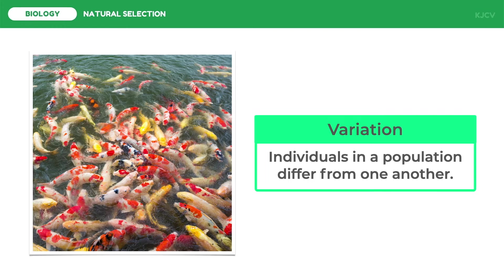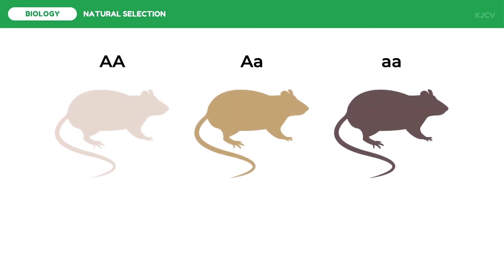To show how variation affects evolution, suppose we have three phenotypes of mice color: albino, coffee-colored, and dark. Albino is expressed by the homozygous dominant genotype, coffee-colored is brought by the heterozygous genotype, and the dark-colored mouse is brought by the homozygous recessive genotype.